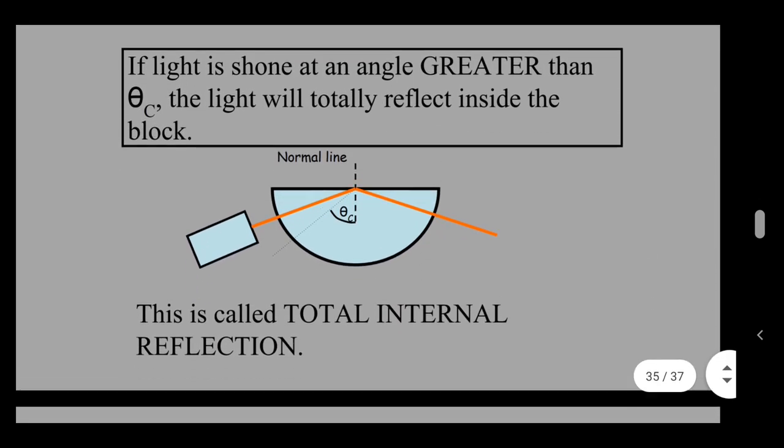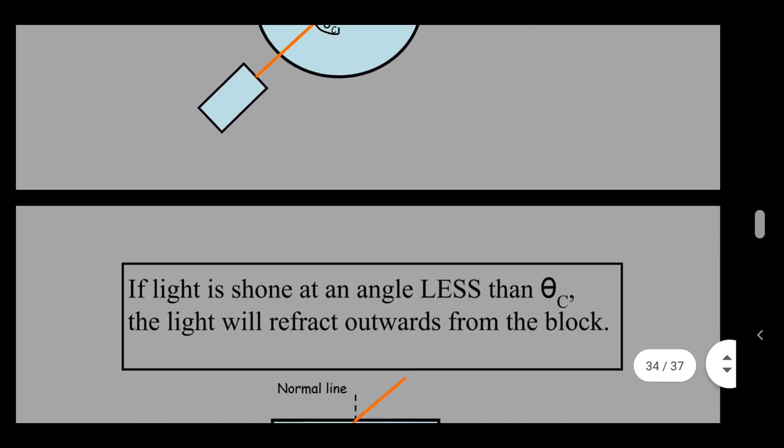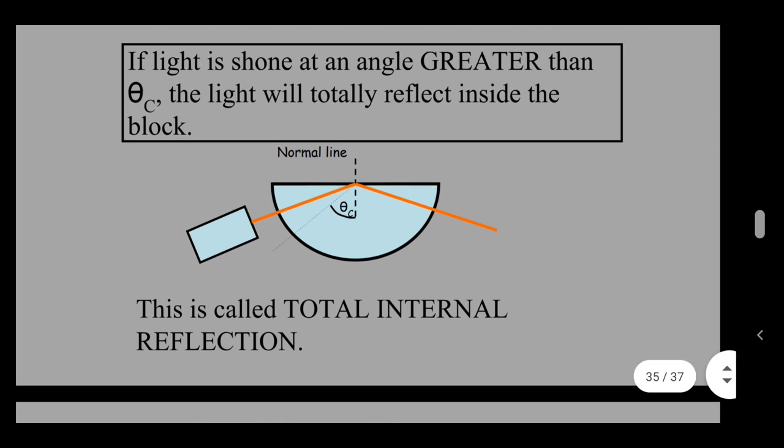But when it's greater than the critical angle, we actually get something that reflects. And something that reflects, in this case, is total internal reflection. So when it's at theta c, or the critical angle, it goes along the block. When it's below, it refracts, and when it's above, it reflects. So that's where we get total internal reflection.